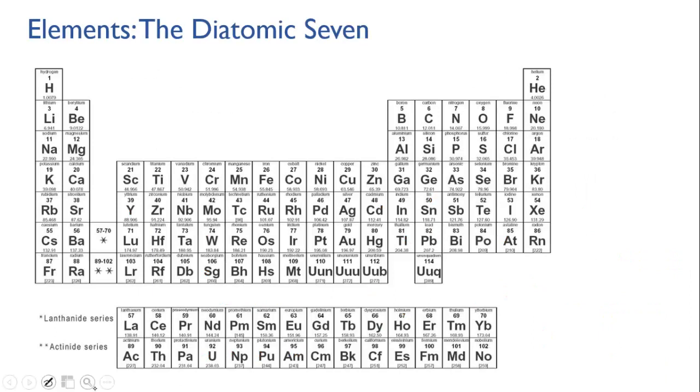One last thing to look at before we finish up here. For most elements, we can assume that they're made from single individual atoms. So when you write down the formula for sodium, it's simply Na, meaning a single Na atom. And if you write the formula for helium, it's He, one helium atom. However, there are seven elements that are an exception to this rule because they always hang around as molecules rather than individual atoms.